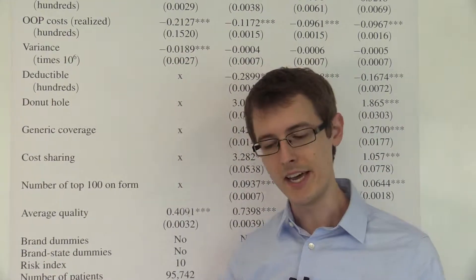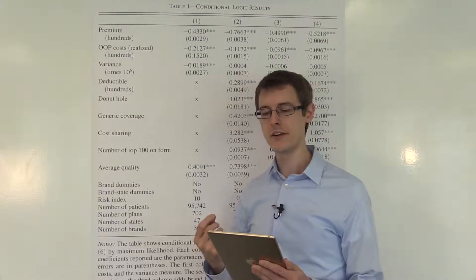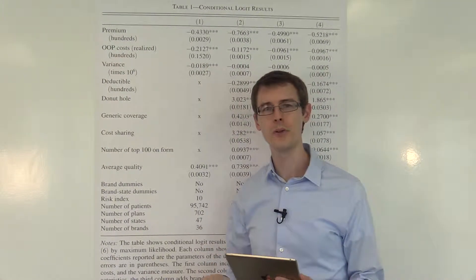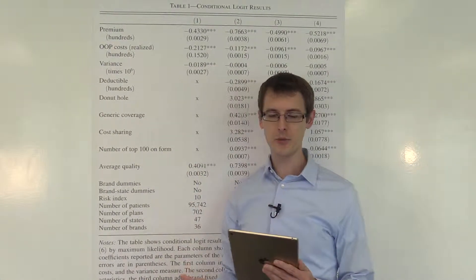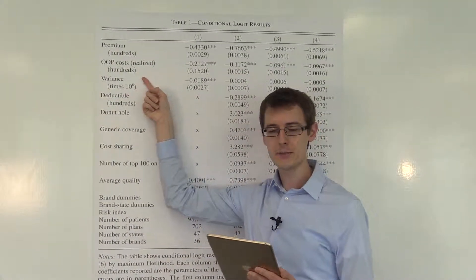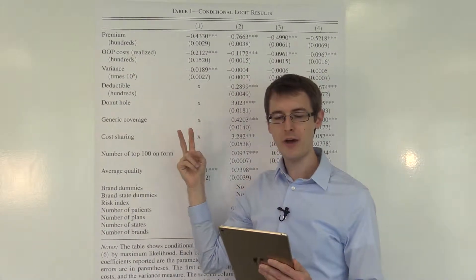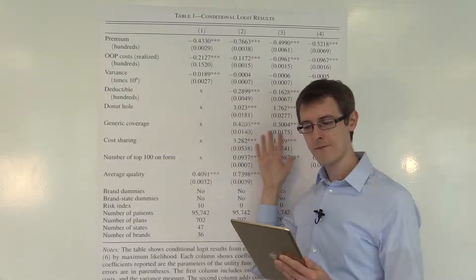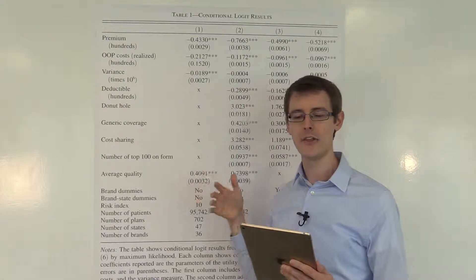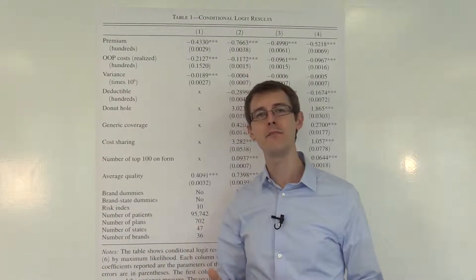And to summarize, they say, quote, 'Our findings are striking. Elders are making choices that are inconsistent with optimization under full information. First, elders place much more weight on planned premiums than they do on expected out-of-pocket costs that they will incur under the plan. Second, consumers appear to value planned financial characteristics far beyond any impacts on their own financial expenses or risk.' That's the main finding of the paper.